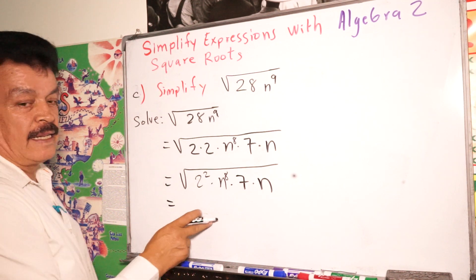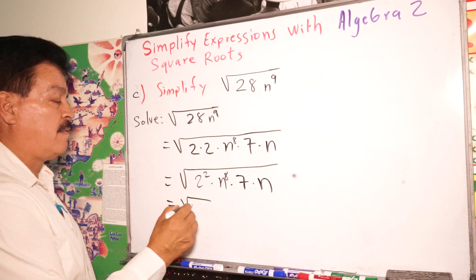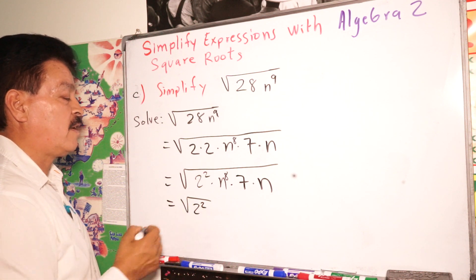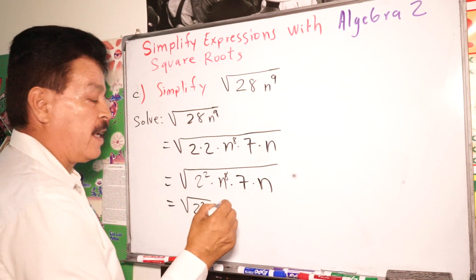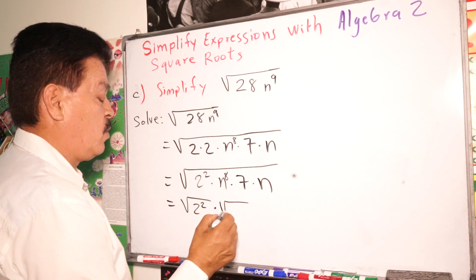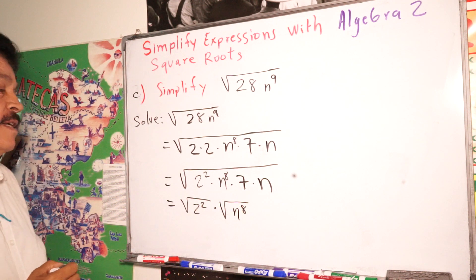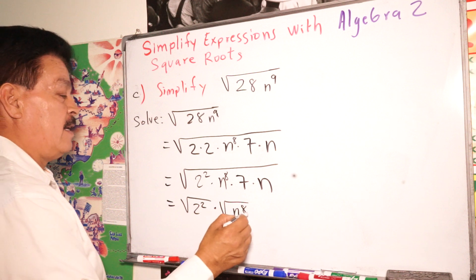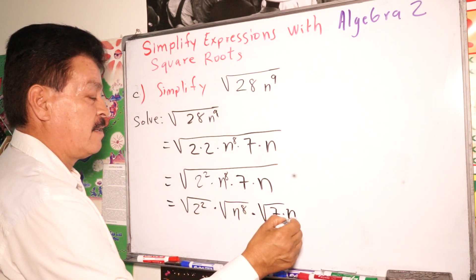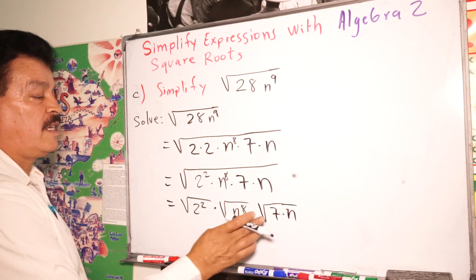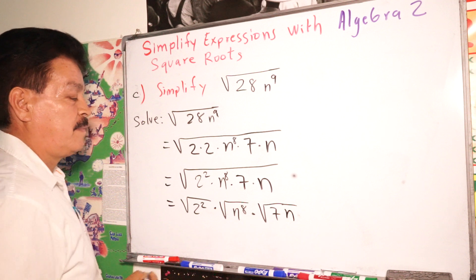One more step. So divide it here, we have 2 to the 2nd power times square root of n to the 8th power times square root of 7 times n, or 7n to simplify.